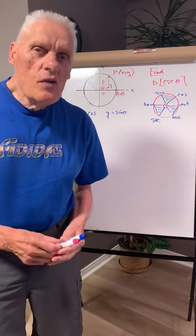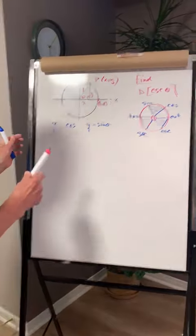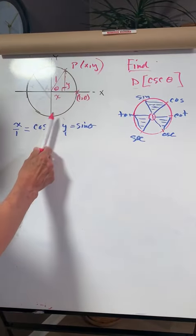We're going to find the derivative of the cosecant function. I need my unit circle to get me started.